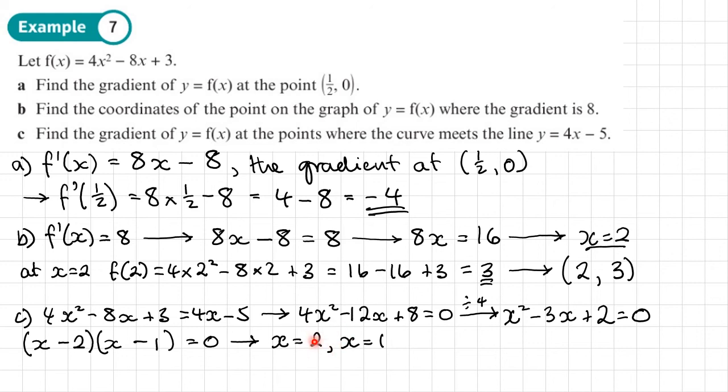I want to find the gradients at these points, so I put these into the gradient function. So I'll do f dash of 2 to find out the gradient when x equals 2. So that would be 8 times by 2 minus 8. So that gives a value of 8. And then I work out the gradient when x is 1. So that would be 8 times 1 minus 8, which will be 0. So what we have is that the gradients at the point where the line and the curve meet are 0 and 8.